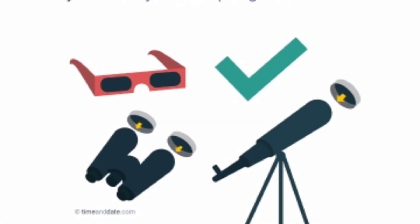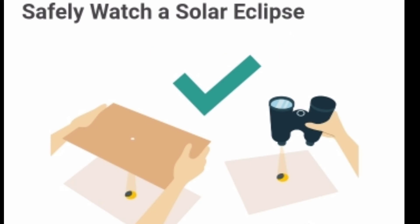If you don't know how to view it safely, you can use a paper with a pinhole and a binocular to see the solar eclipse. That will be great.